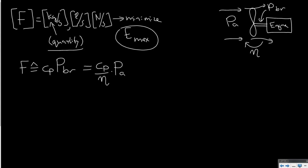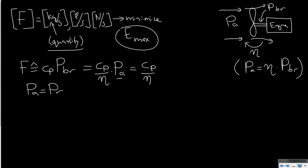Power available is equal to this efficiency times the shaft power. Since we are considering cruise flight at constant airspeed, power available is equal to power required. Which means that fuel flow equals Cp divided by the efficiency multiplied with power required.